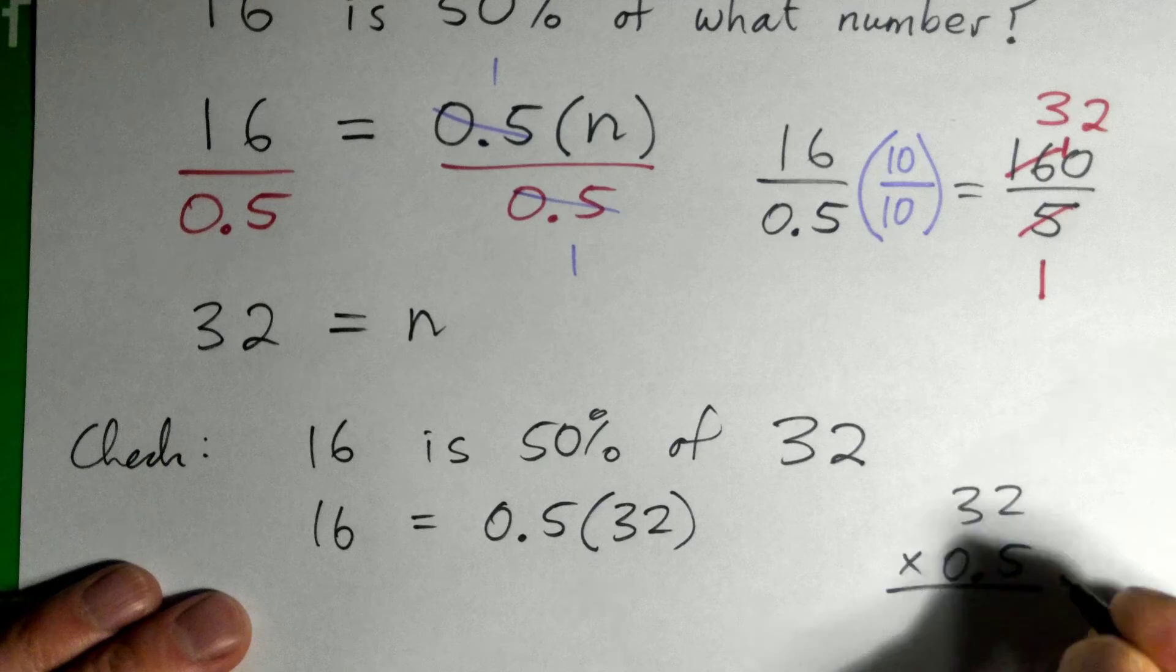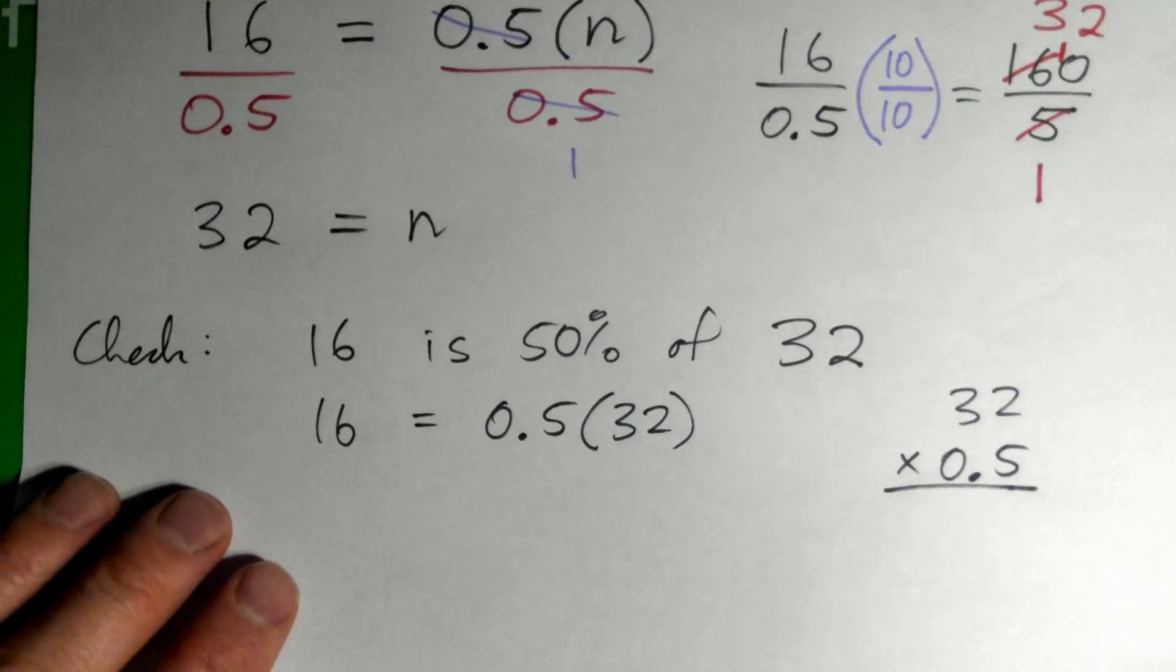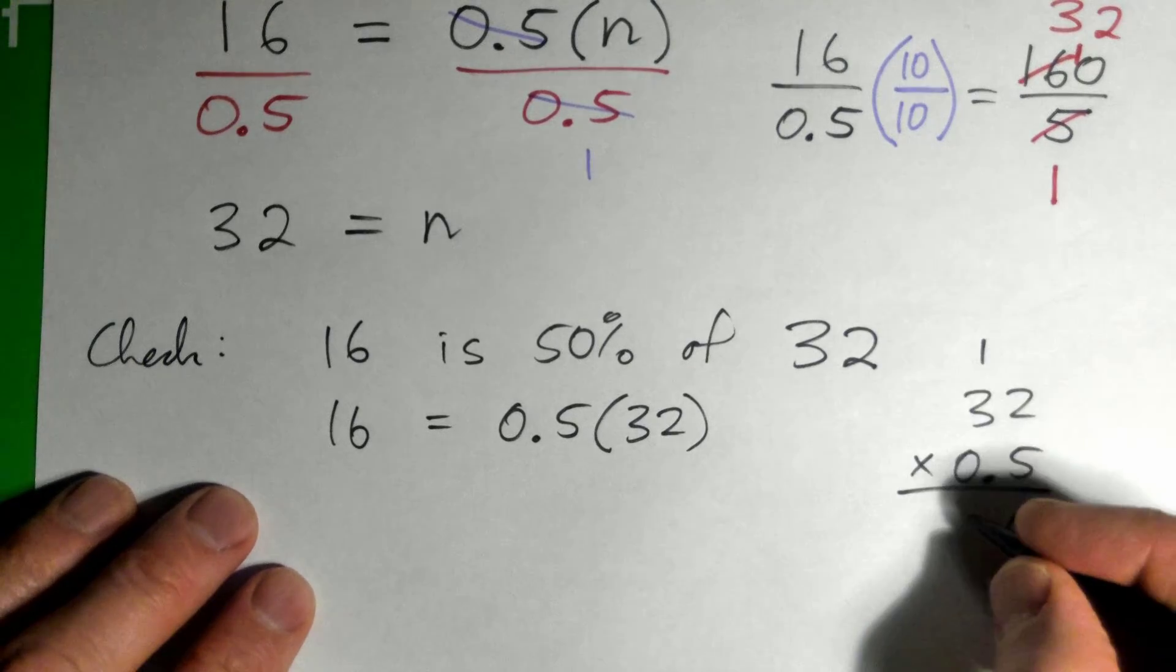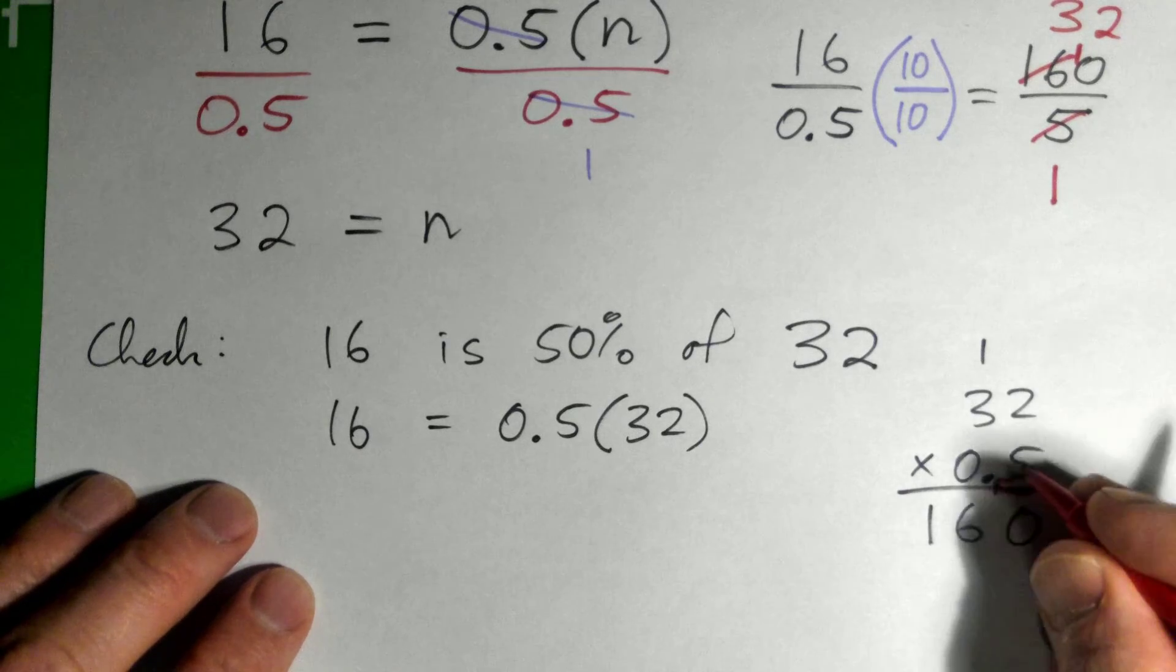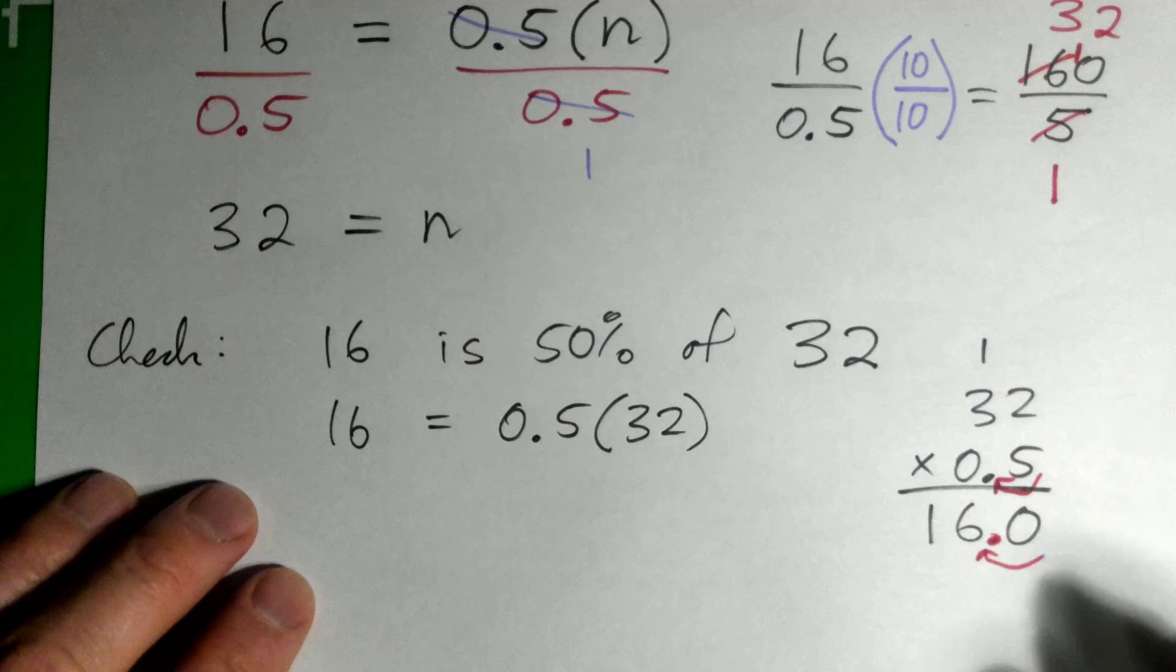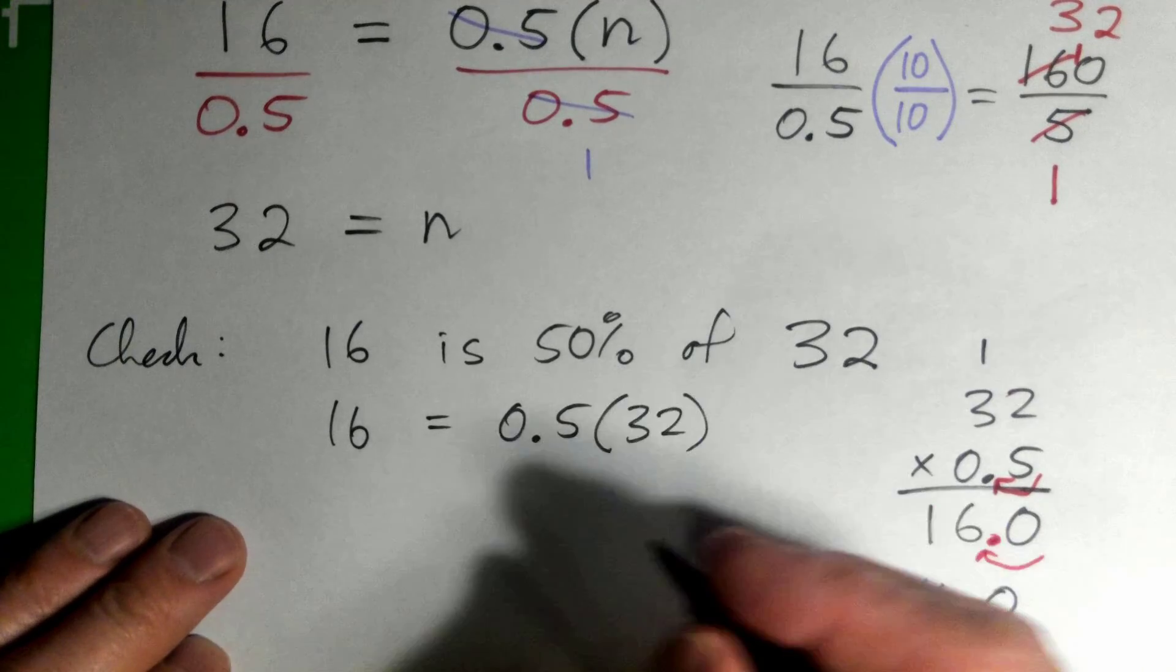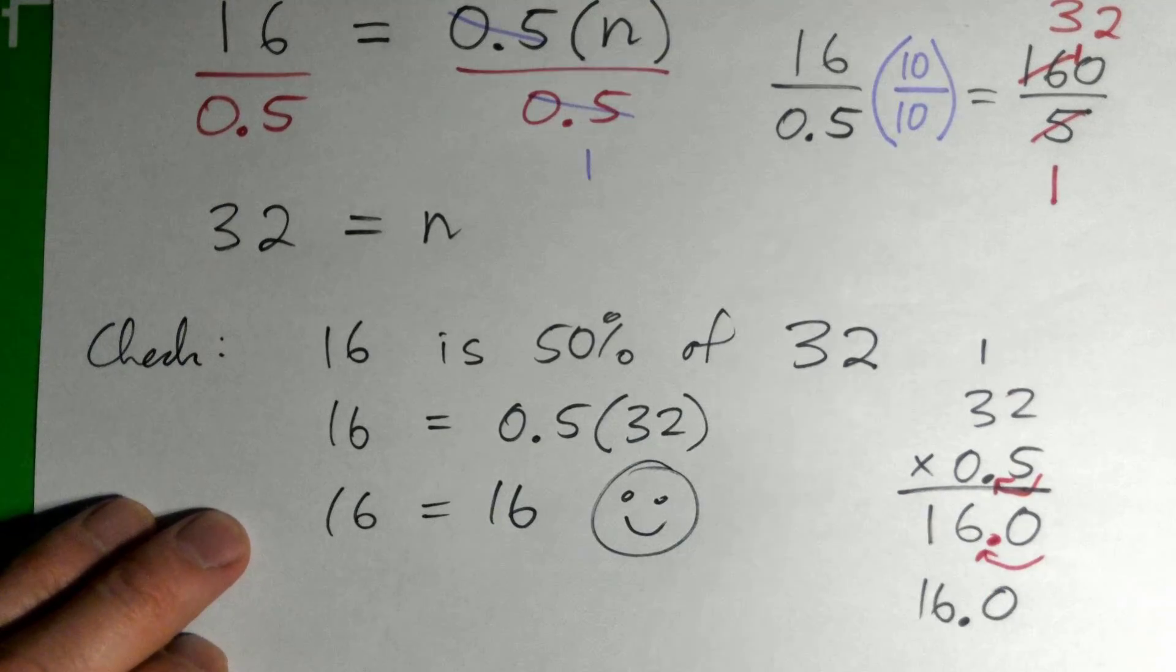5 twos is 10, carry 1. 5 threes is 15 and 1 is 16. And there's one decimal place in the multiplication, so there must be one in the answer, and so that would be 16.0 or 16. So 16 equals 16, that works out.